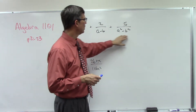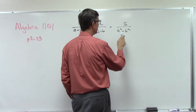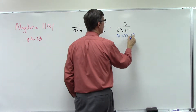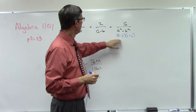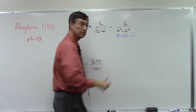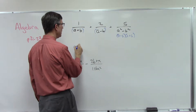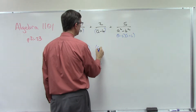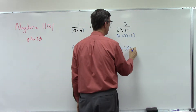In the previous lesson, if you missed it, we talked about how to get a common denominator. It's important to recognize that this can actually be factored as (a minus b)(a plus b) — the difference of perfect squares. Notice this one is the same as this, and this one is the same as this. So what is my common denominator going to be? It's going to be (a minus b)(a plus b).